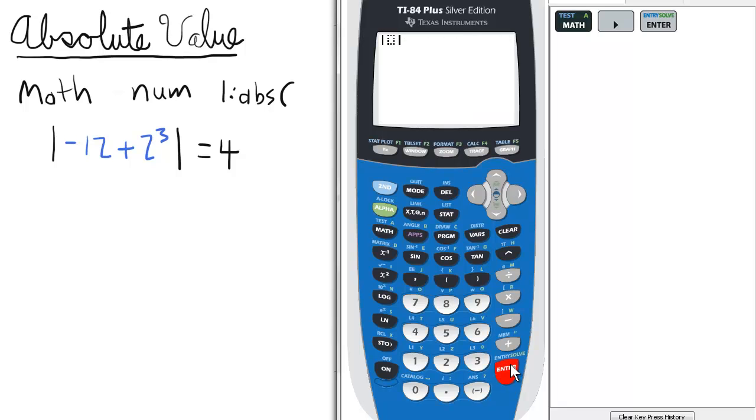Now, between the absolute value bars, we're going to enter our expression. In this case, negative 12 plus 2 raised to the third, and Enter.